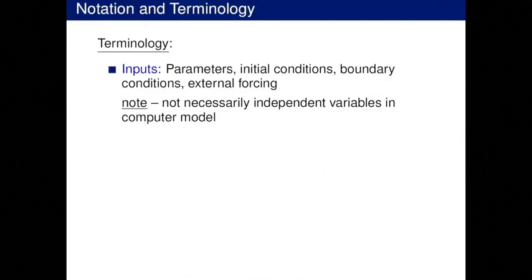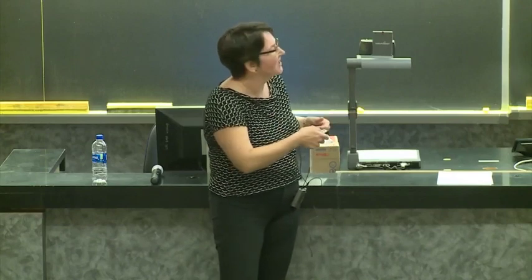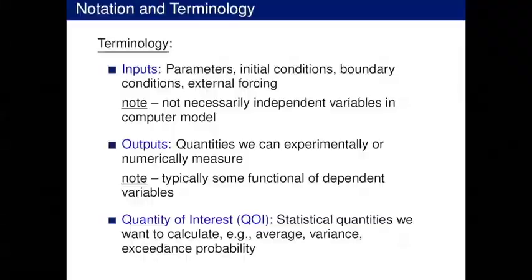Here's my terminology. Inputs can include anything: parameters, initial conditions, boundary conditions, some kind of external forcing — as opposed to functions, where a function takes in whatever independent variable. For outputs, we're thinking about quantities that we can experimentally or numerically measure — often some functional of the dependent variable, not necessarily the whole state. And then we have quantities of interest: statistical quantities we want to calculate, maybe averages, variances, or exceedance probabilities, to make predictions and forecasts on these complicated systems.